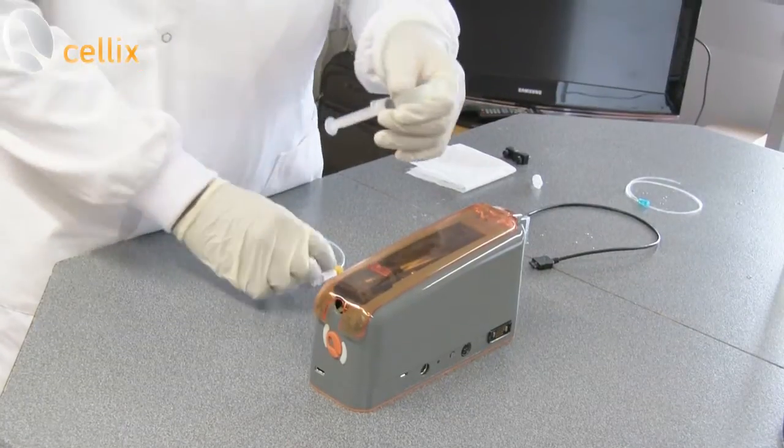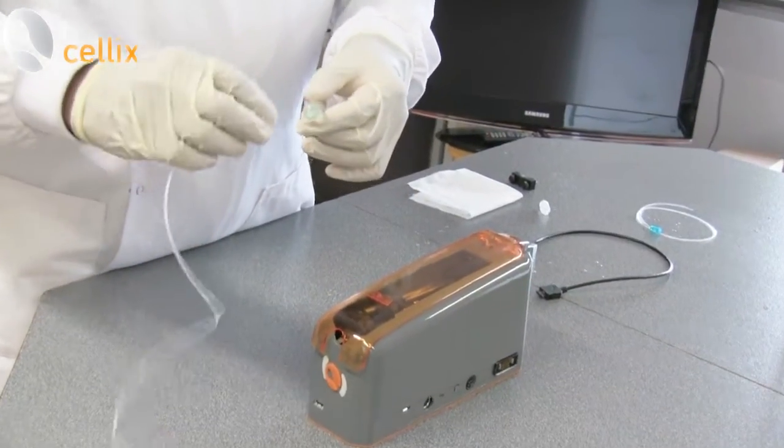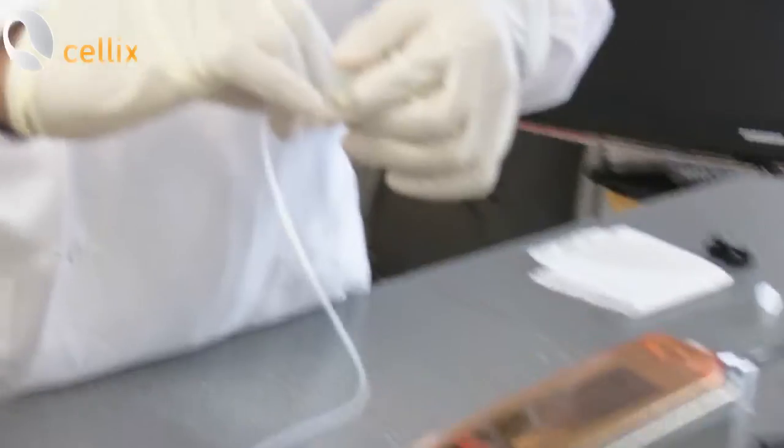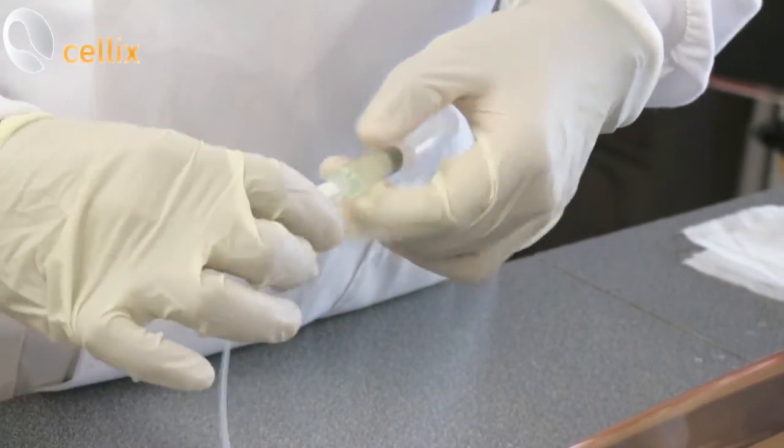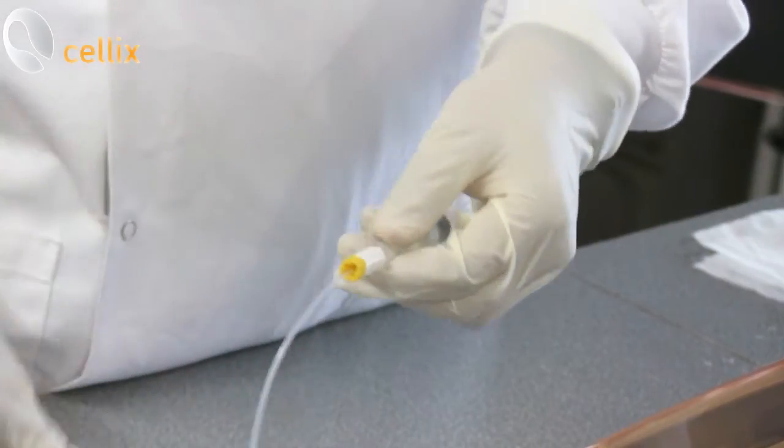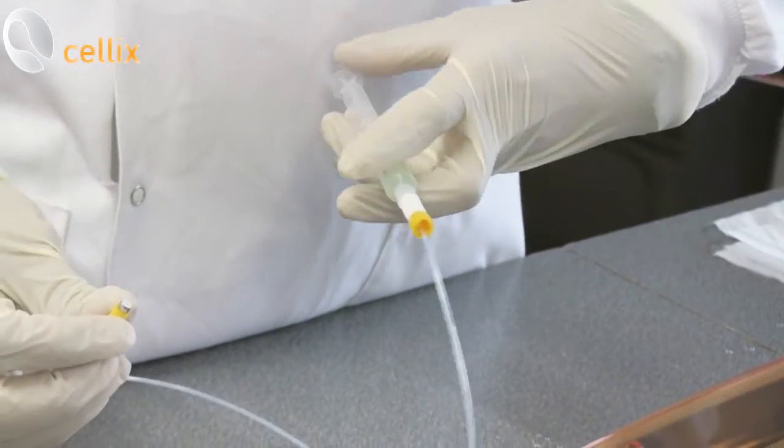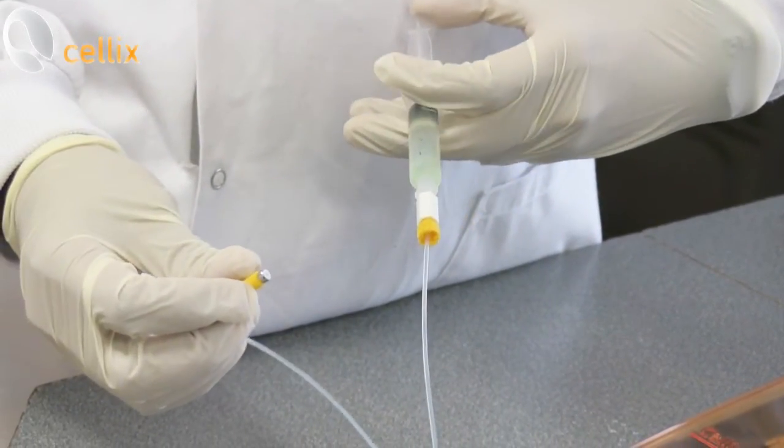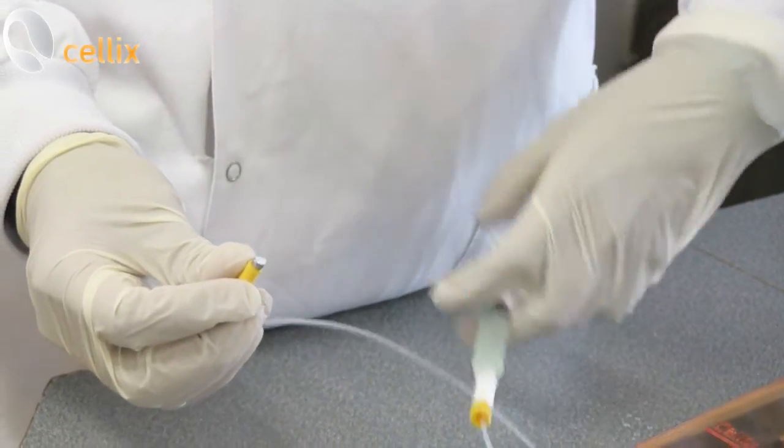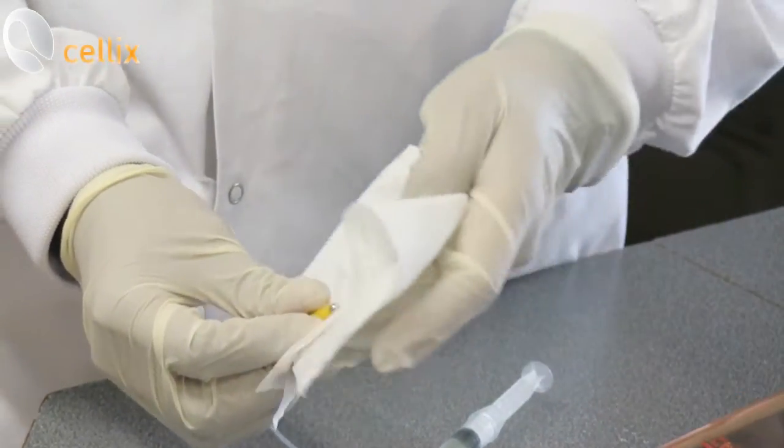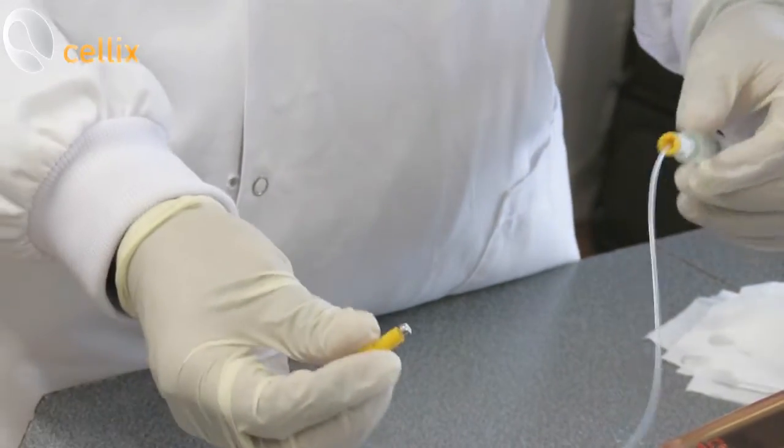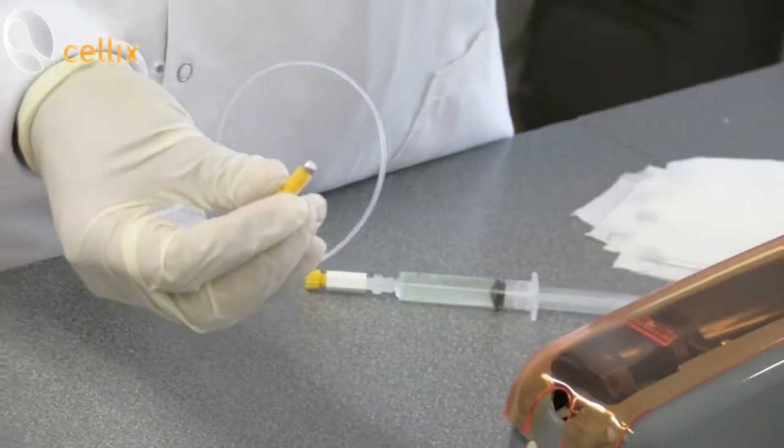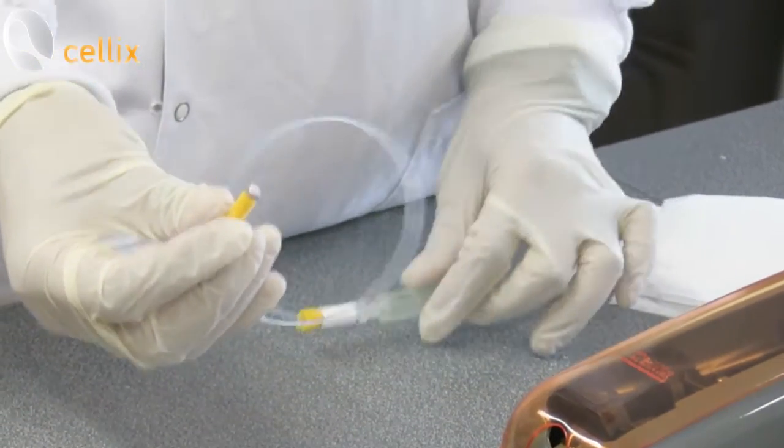This is a sample. You take this tubing and make sure the connections are tight. You usually need to remove the bubbles, so gently fuse some liquid. Now it's pre-filled with your sample.